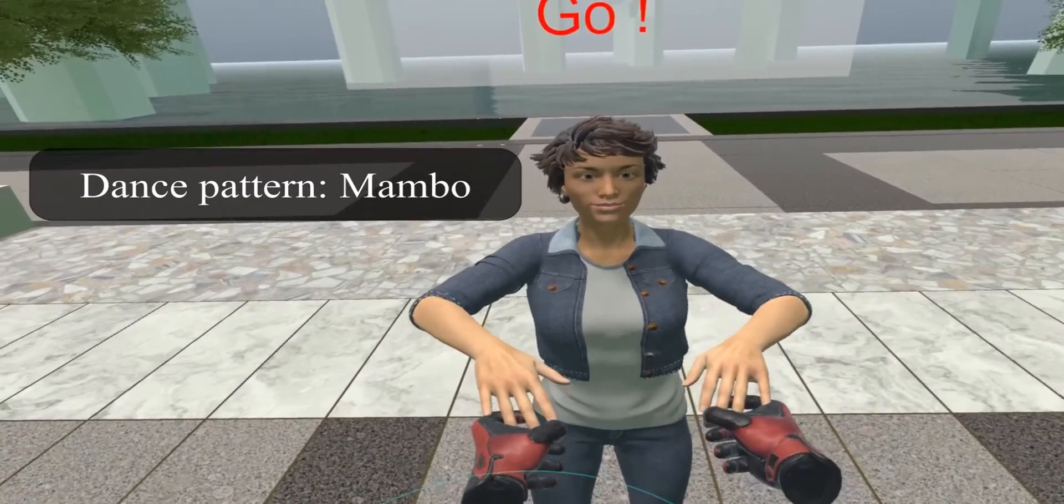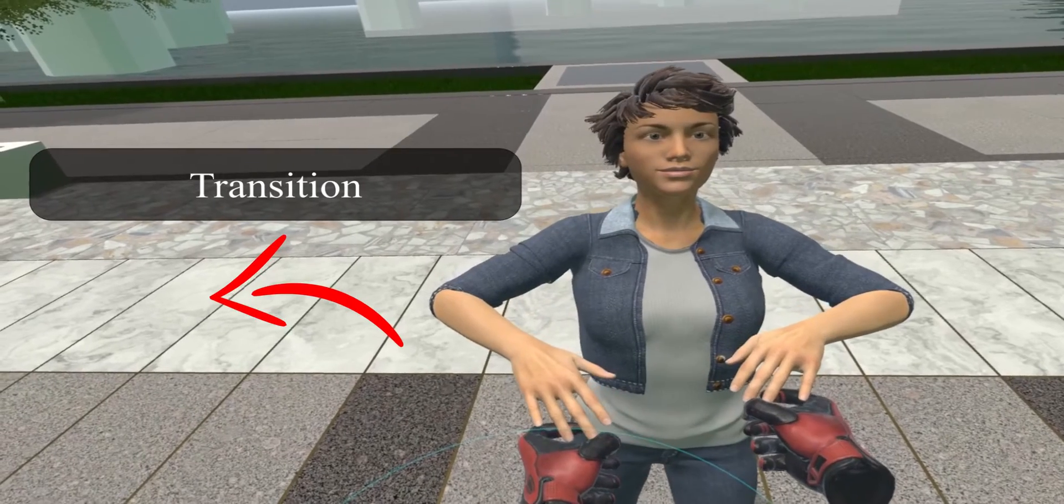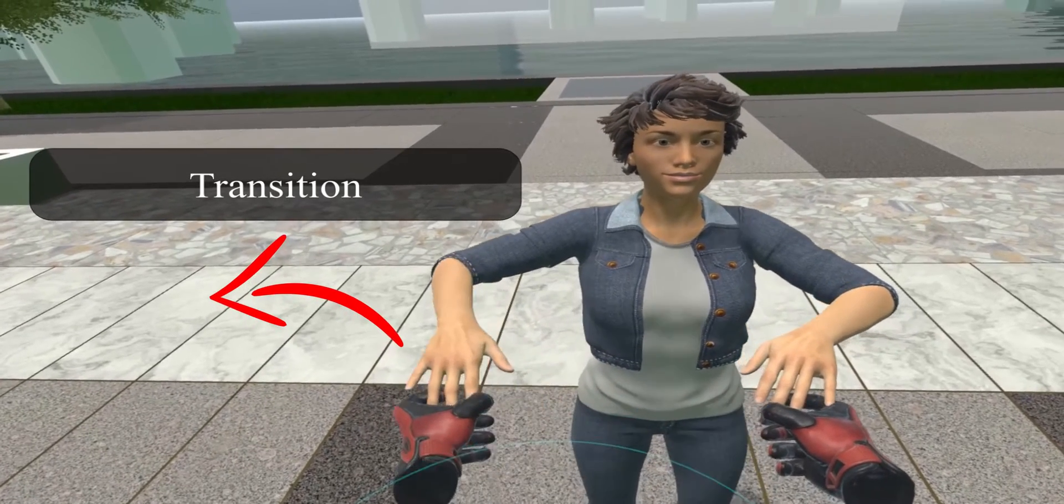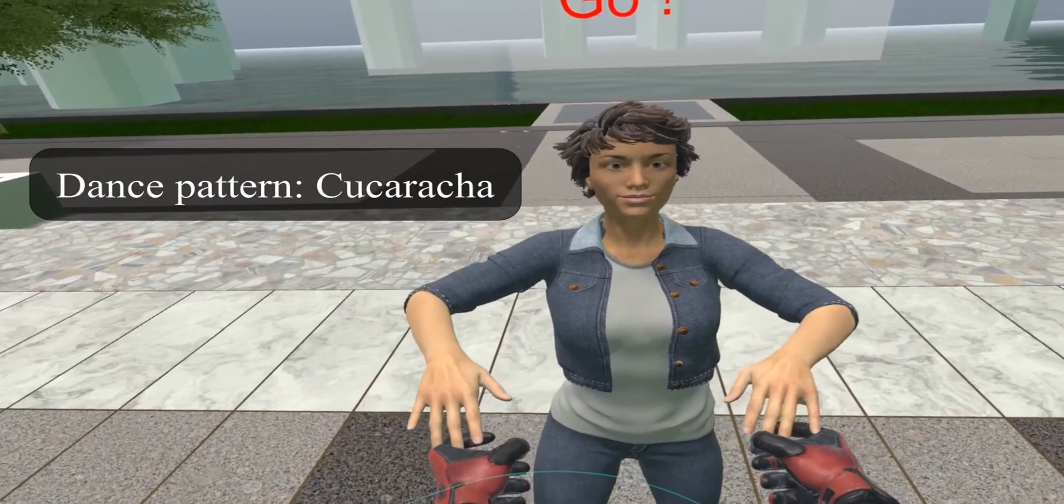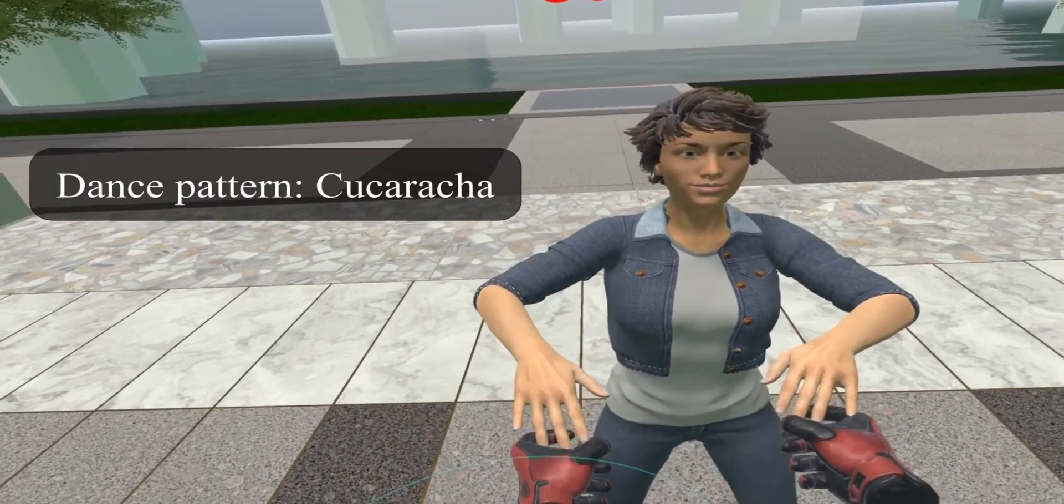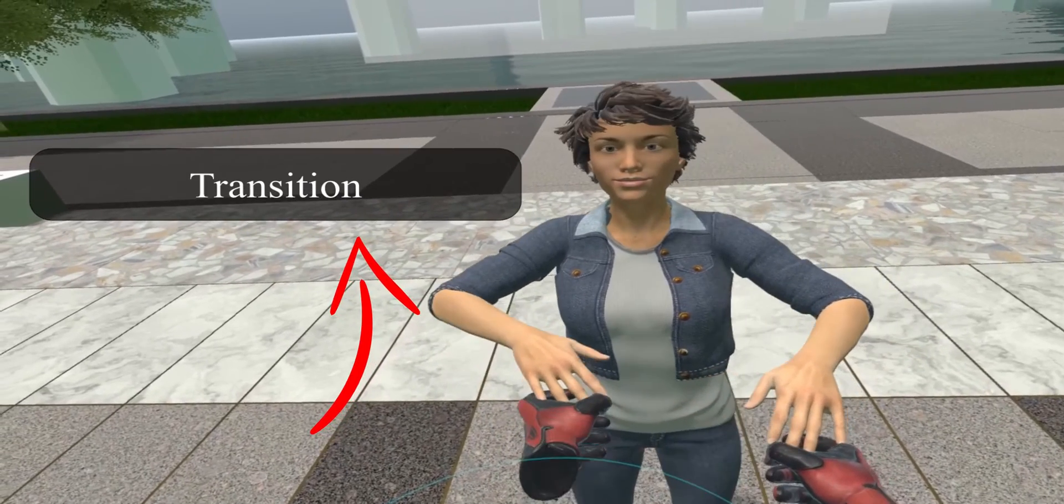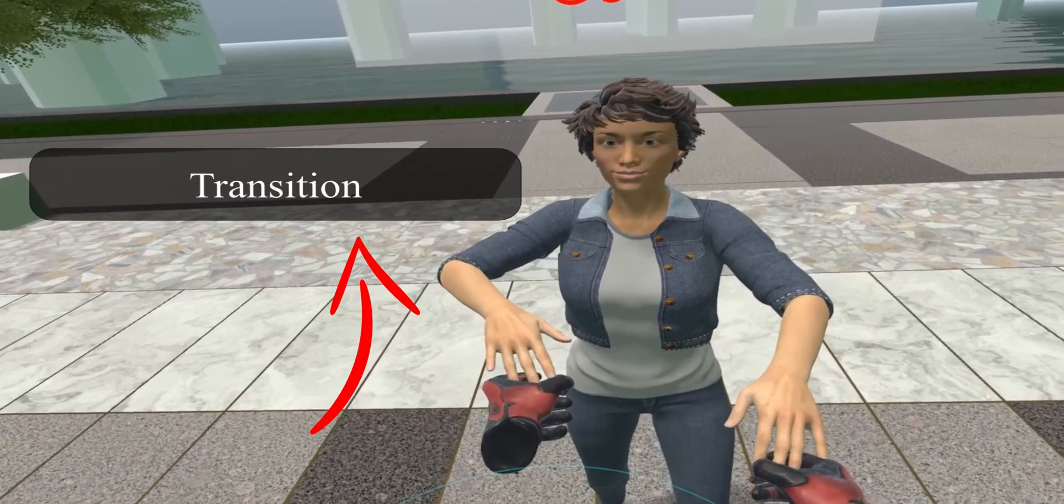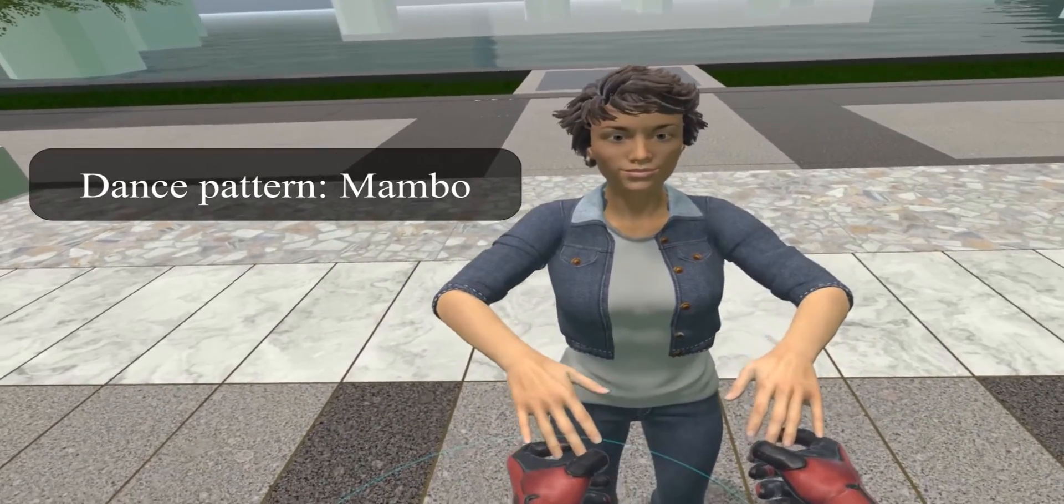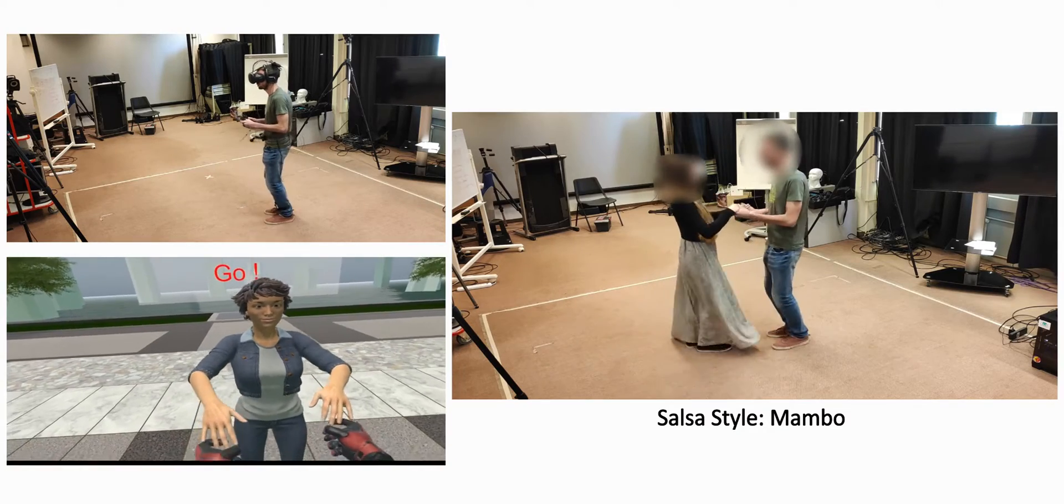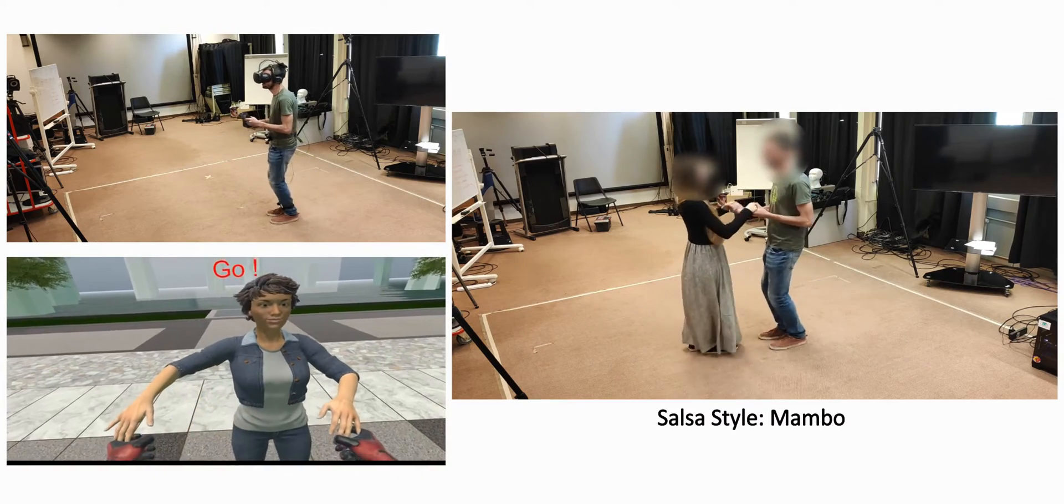The user can transmit the information of changing dance patterns from Mambo to Cucaracha and vice versa by applying a force at the right time as guiding its partner in a real dance scenario. This gives the feeling of movement interaction in a similar way to a real dance scenario with a partner.